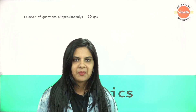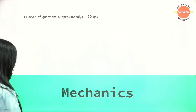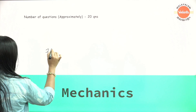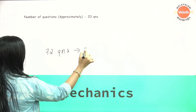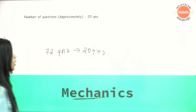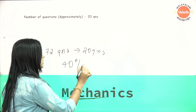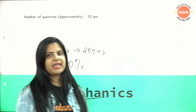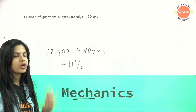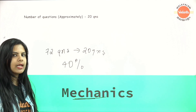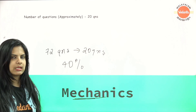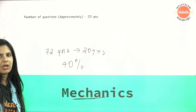All together, we have 72 questions in Physics. Out of these 72 questions, 20 questions come from Mechanics. That means approximately 40% of questions come from Mechanics, as seen in previous year papers.